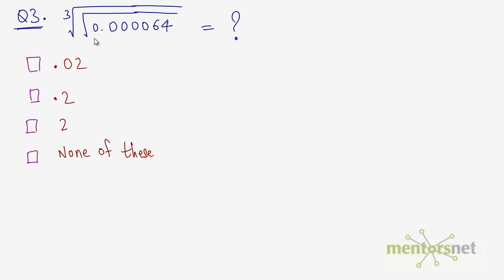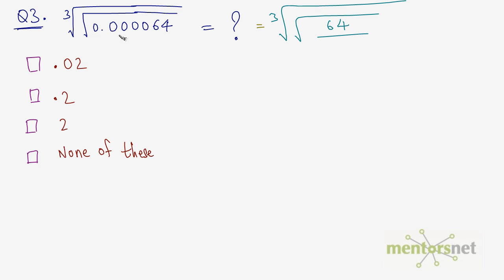Question number 3 — this may seem a bit trickier. We have the cube root of the square root of 0.000064. Let us simplify the inside: 0.000064 can be written as 64 divided by 10 to the power 6, since there are 6 digits after the decimal point. So we have the cube root of the square root of 64 over 10 to the power 6.